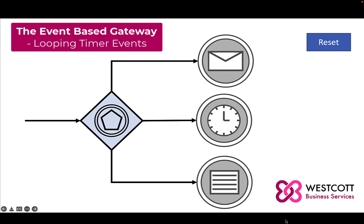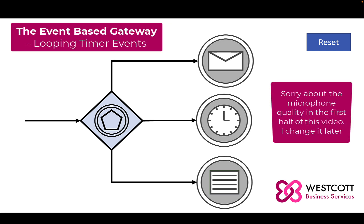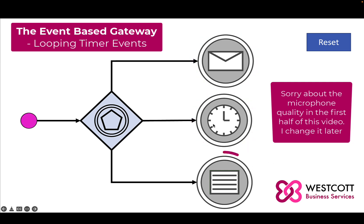What we have here is a very simple configuration of an event-based gateway with three events attached to it: a message event, a timer event, and a conditional event. We also have our friend the token, which will help us simulate what happens as it passes to the event-based gateway and onto the events. Let's get the token started — by clicking the event-based gateway, it pulls the token towards it.